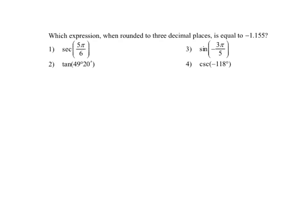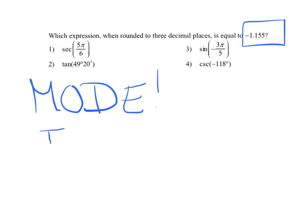For our next question, it was multiple choice. It says, which expression, when rounded to 3 decimal places, is equal to negative 1.55? Well, it seems like such a simple question. Yet, there's a little trick to it. And that's you watching your mode. I can't stress enough. You've got to understand the difference between a degree and a radian. If it's in degrees, you're going to see a degree symbol. If you see pi, we need to switch to radian mode. Degree, we're in degree mode. Pi, we're in radian mode.